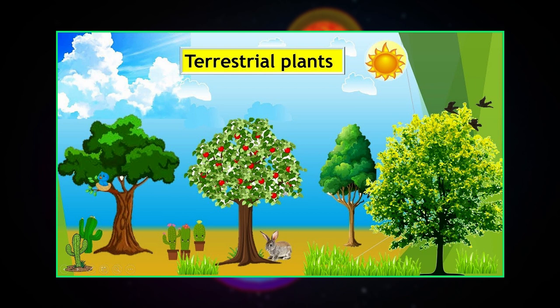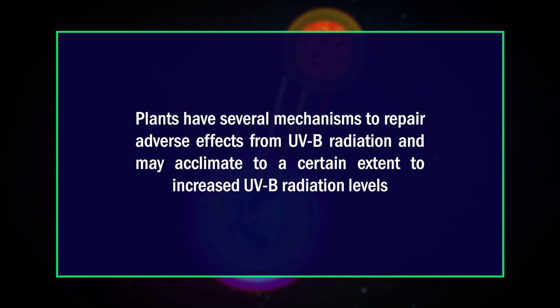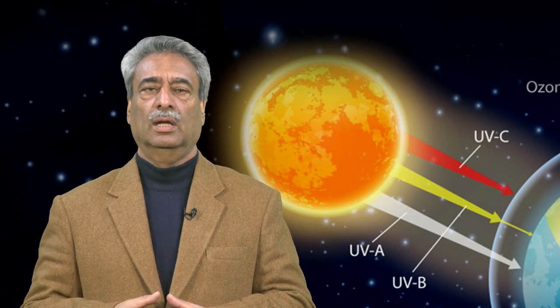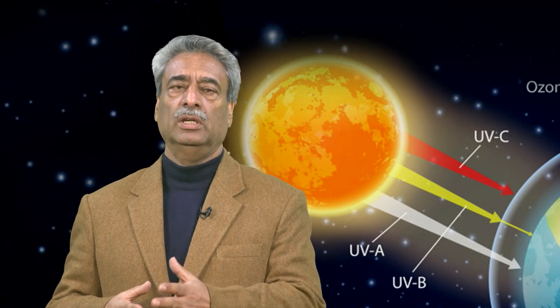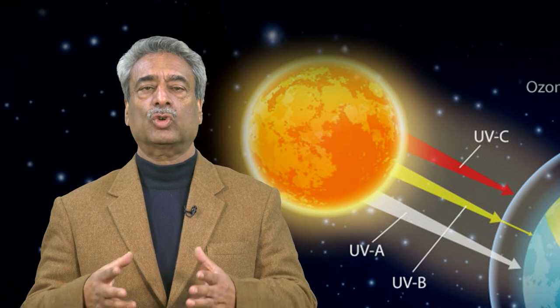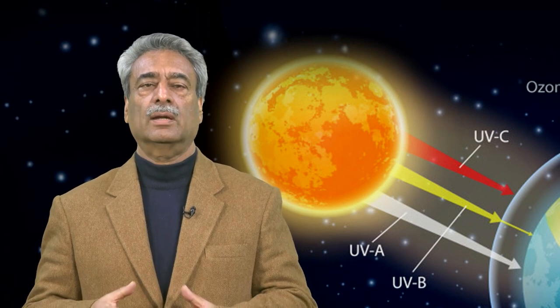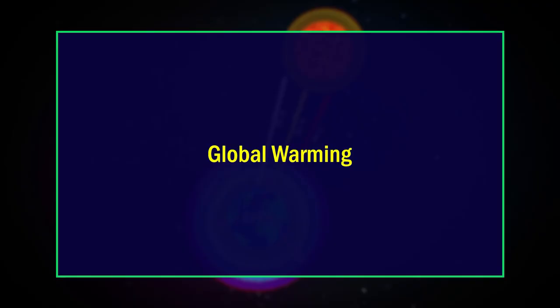Terrestrial plants vary considerably in their response to UVB radiation between species and even between cultivars of the same species. Plants have several mechanisms to repair adverse effects from UVB radiation and may acclimate to a certain extent to increased UVB levels. In agriculture, reduction in stratospheric ozone will require the use of UVB-tolerant cultivars and the development of new ones. The risks of increased UVB due to ozone depletion include damaged crops and aquatic organisms, increased formation of ground-level smog, and accelerated weathering of outdoor plastics.